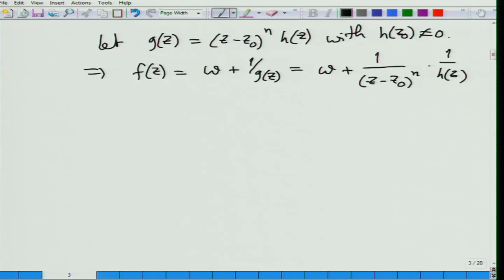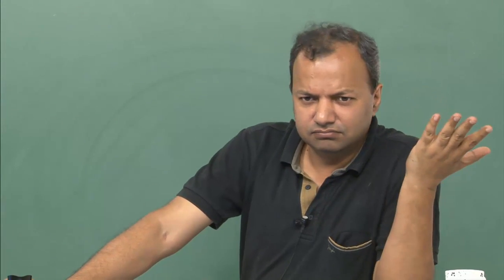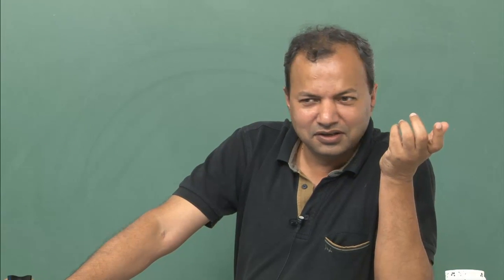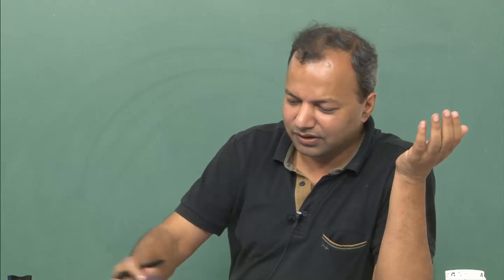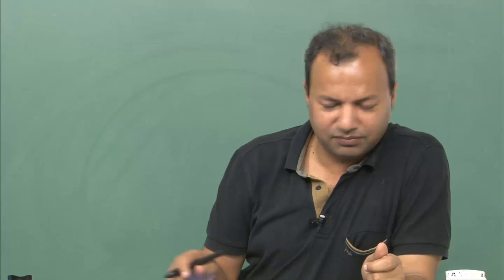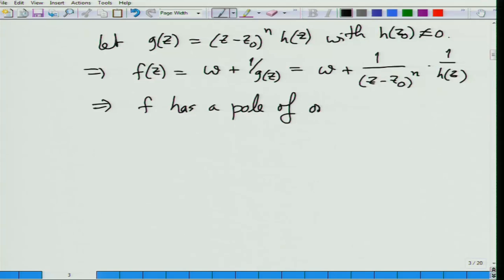What can we say about f? Since h(z naught) ≠ 0, 1/h(z naught) is nonzero and bounded, so 1/h(z) is analytic inside the disk. Therefore f(z) has a pole of order n at z naught, because you can write 1/h(z) as a power series, and this gives a Laurent series with the lowest degree being −n. That is the end of the proof.